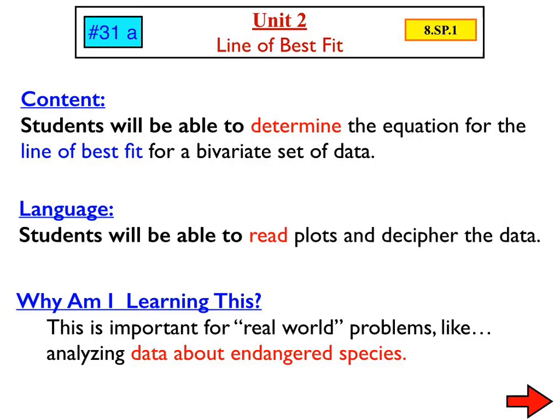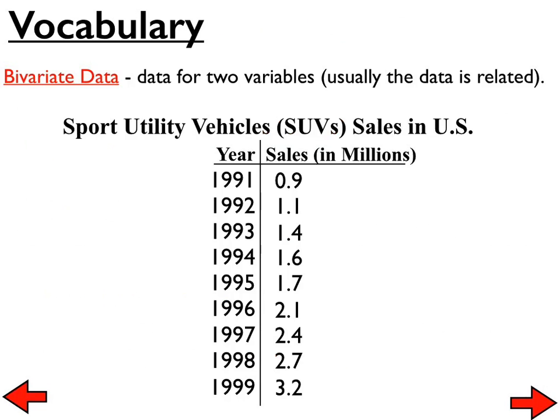And that's just a fancy way of saying a table of x and y values. You're also going to be able to read plots and decipher the data. So here's a set of data. We have year compared to sales of SUVs. You could think of the year as the x values in a table, and you could think of the sales as the y value in a table. That's when I mentioned bivariate data. That's just a fancy term for an x, y chart, an x, y table, or values that you could interpret as x and y values.